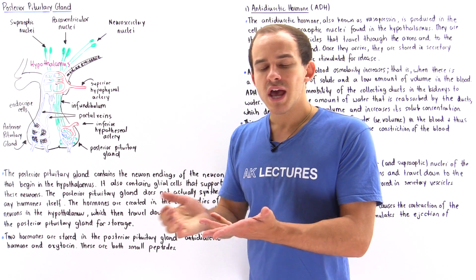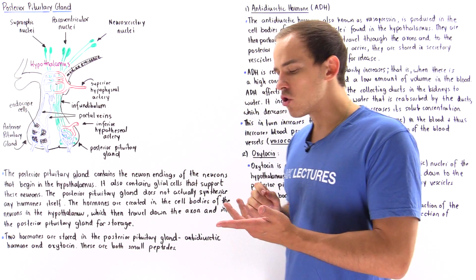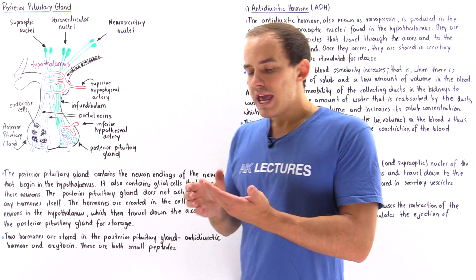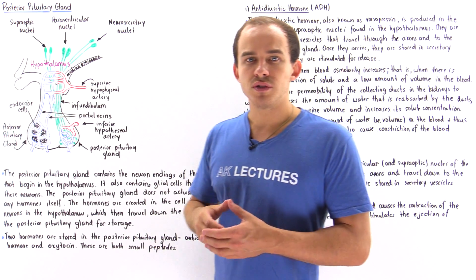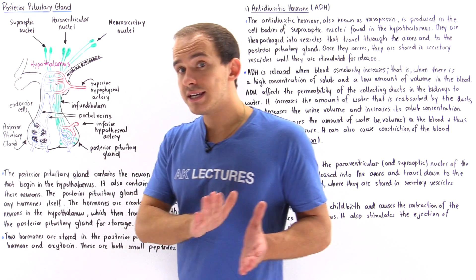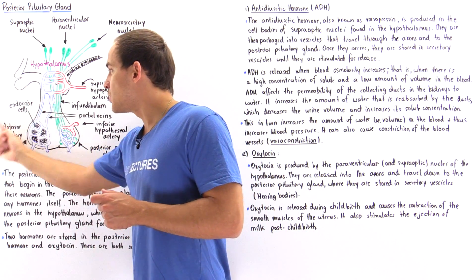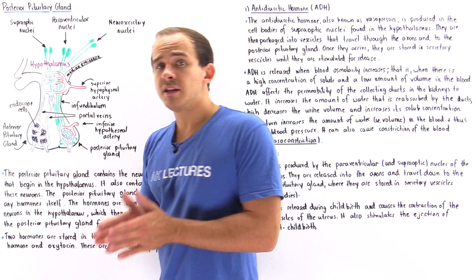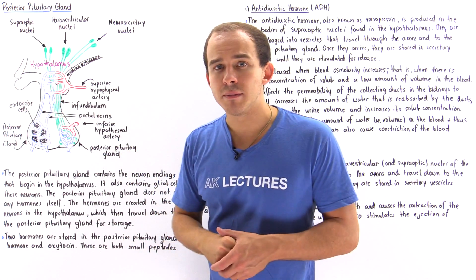Those six hormones are: human growth hormone, ACTH (also known as the adrenocorticotropic hormone), the thyroid stimulating hormone, prolactin, follicle stimulating hormone, and the luteinizing hormone. All six are produced in the endocrine cells of the anterior pituitary gland and are controlled by hormones produced in the hypothalamus.